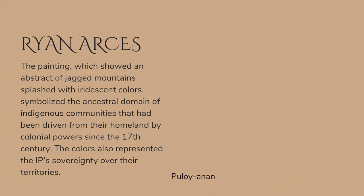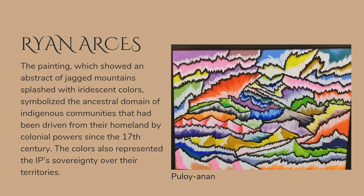Second artist, we have Ryan Arces. His painting, called Puloy Anan, showed an abstract of jagged mountains splashed with iridescent colors, symbolizing the ancestral domain of indigenous communities that had been driven from their homeland by colonial powers since the 17th century. The colors also represented the indigenous people's sovereignty over their territories.